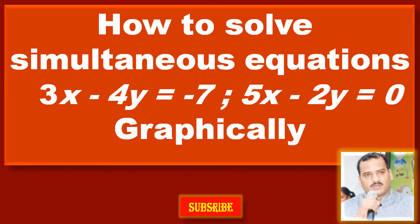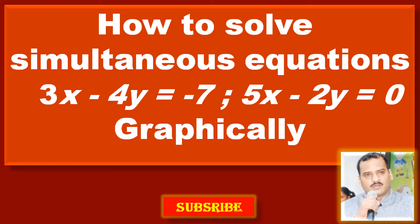Friends, now we have to learn how to solve simultaneous equations 3x minus 4y is equal to minus 7 and 5x minus 2y is equal to 0 graphically. That means by using a graph we have to solve these two equations.